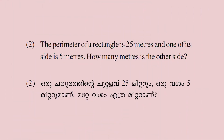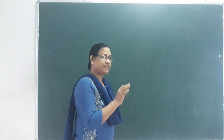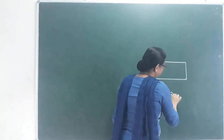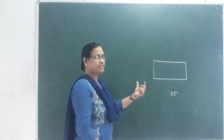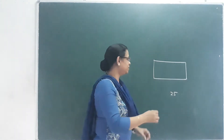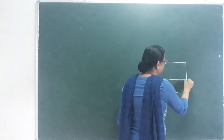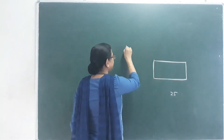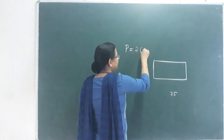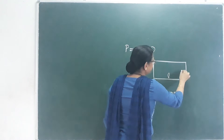The perimeter of your rectangle is 25 meters, and one of its sides is 5 meters. How many meters is the other side? The perimeter is the total of two lengths and two breadths. The perimeter is 2 into L plus B.